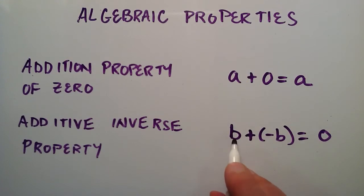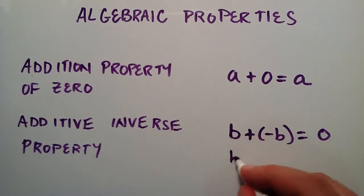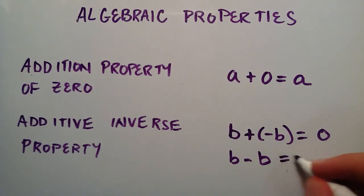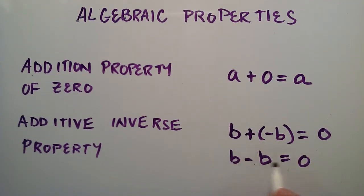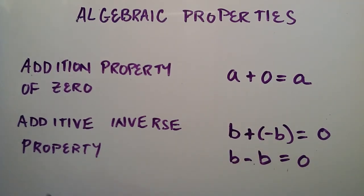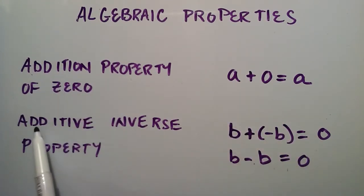So adding a negative b is really the same thing as subtracting a b. So really this is the same thing as b minus b equals zero. So this is the addition property of zero up here, and this is the additive inverse property right here.